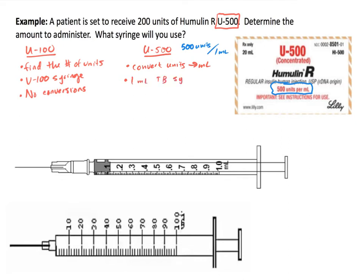So depending on the type of insulin — U500 versus U100 — there are two very different procedures. In this example, we were told the patient needs to receive 200 units of U500, and we need to convert this into milliliters because it's U500.